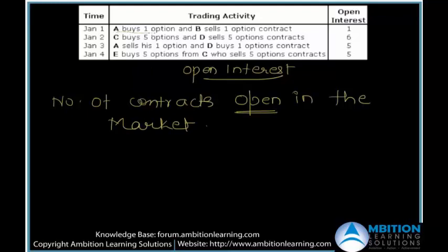For example, A buys one option and B sells one option. There is one buyer and one seller, which makes one contract — so the open interest is one. Now a new entity C buys five options and D, also a new entity, sells five. You had one contract open before, plus five new contracts, so the open interest in the market is now six.